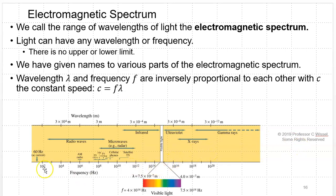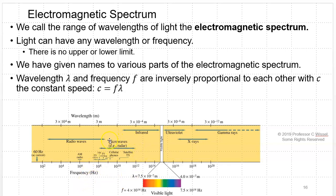Here's the electromagnetic spectrum. At the low-frequency end, the wavelength is very long — it could be the size of the Earth or bigger. The 60 Hz wall socket outlet current is at the very low frequency, very long wavelength, very low energy per photon end. Then we get into radio waves — AM radio — and higher up is the FM band. Notice there's some overlap; these boundaries are somewhat arbitrary. Microwaves are here — radar, cell phones, TV, satellite TV, and Wi-Fi are in this range.